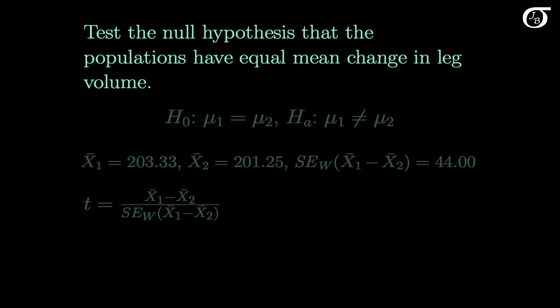Let's test the null hypothesis that the populations have equal mean change in leg volume. What should we use for an alternative hypothesis? Well, as is often the case, that's debatable. I would argue for a two-sided alternative hypothesis.